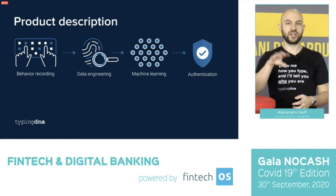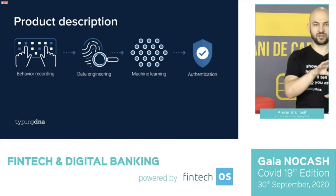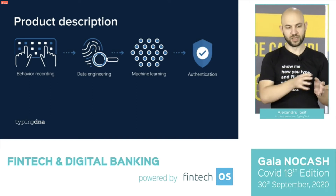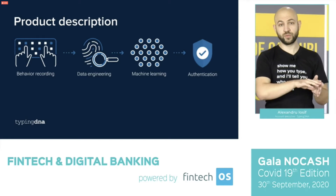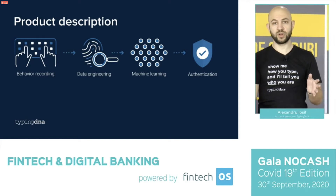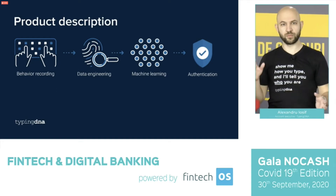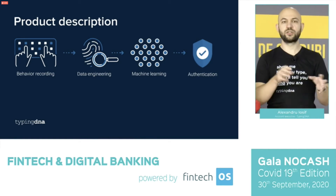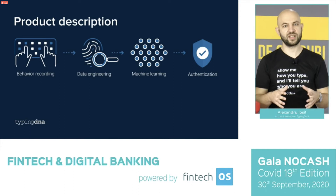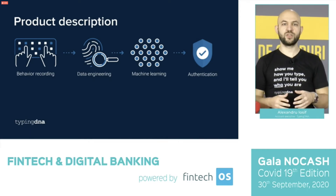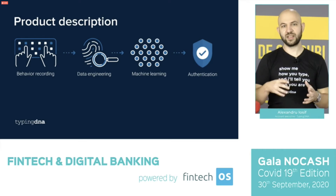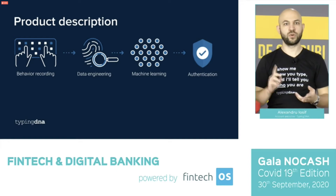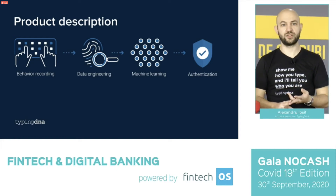If I were to break down the solution into four easy steps: first, we record the behavior of the typing; then we send that behavior to a cloud where the features are extracted — a very important step, the feature extraction — where we look at traits that are very static throughout a person's lifetime. We push those features through our machine learning algorithm and then give out a risk score, which generally feeds into a risk engine or can be used as an authentication mechanism.